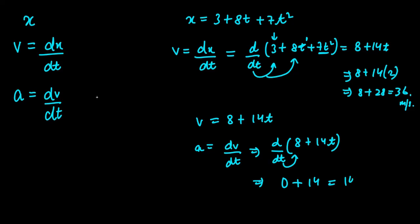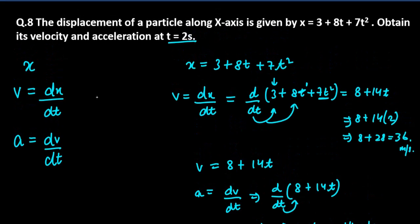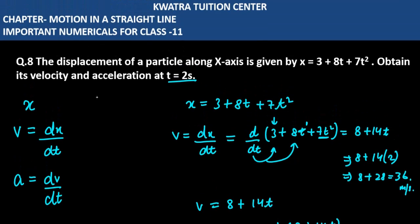What will we find? It is 14 meter per second square. That means the answer for second part is 14 meter per second square. Acceleration is 14 and the velocity is 36 meter per second.